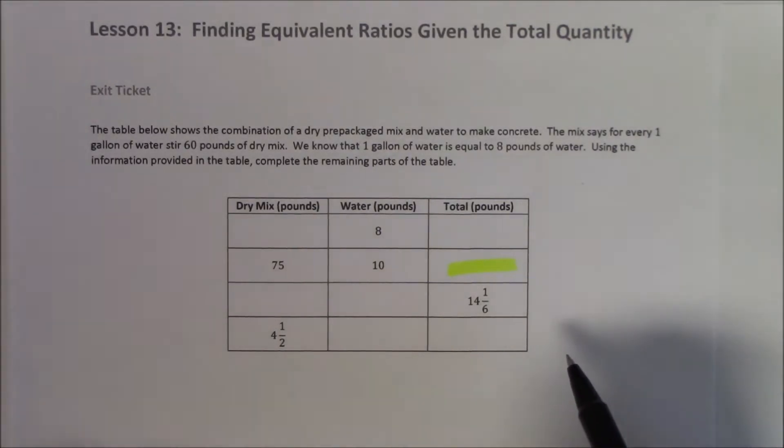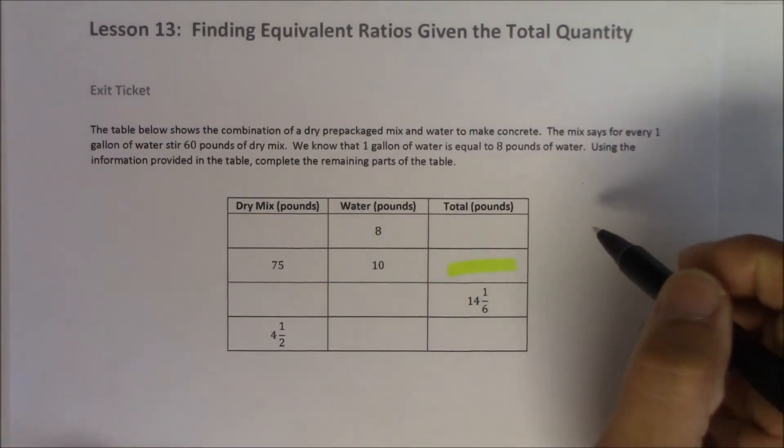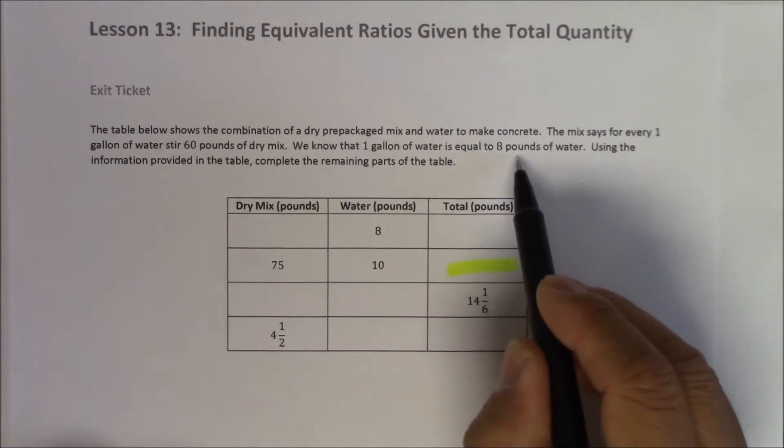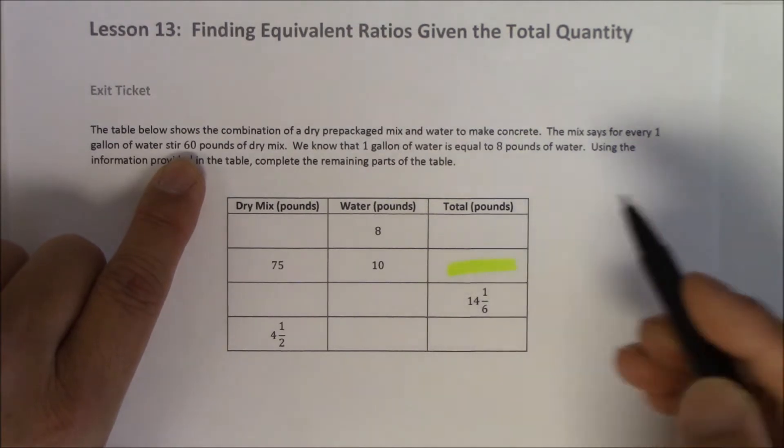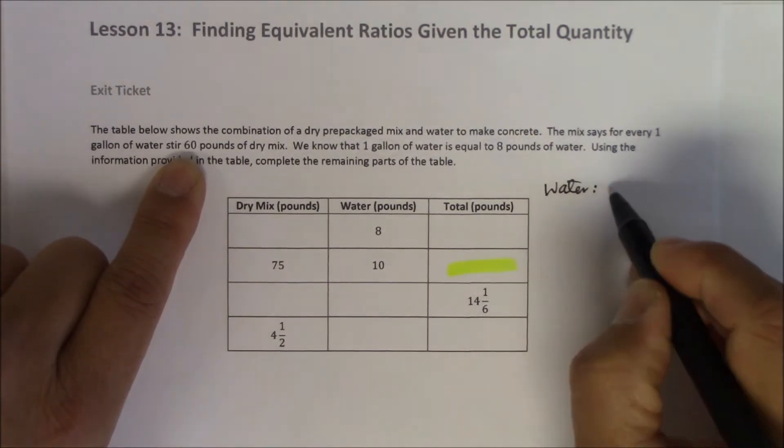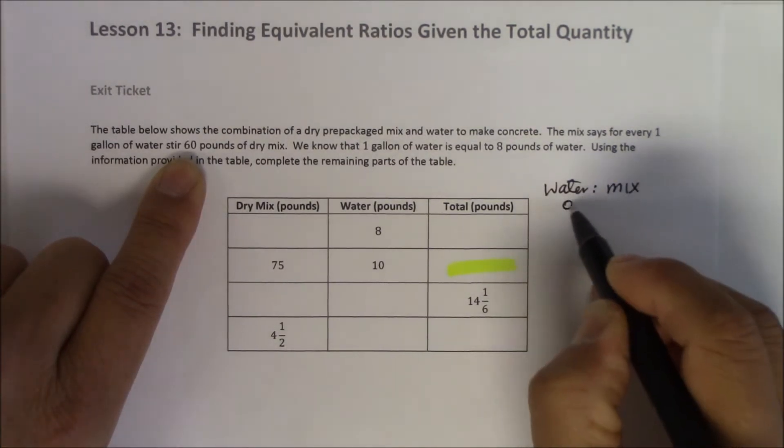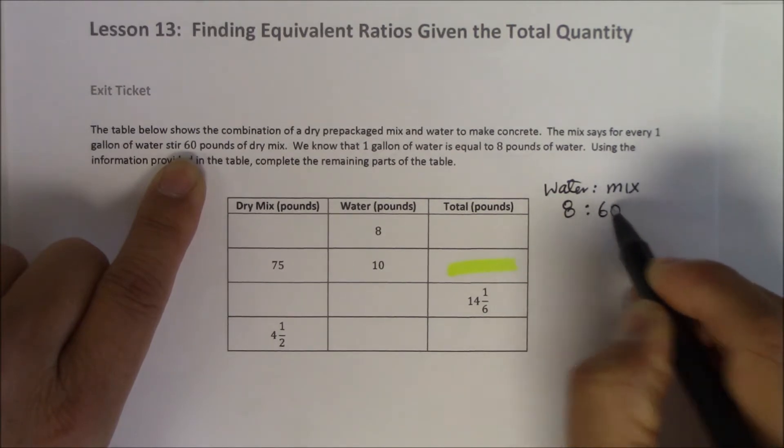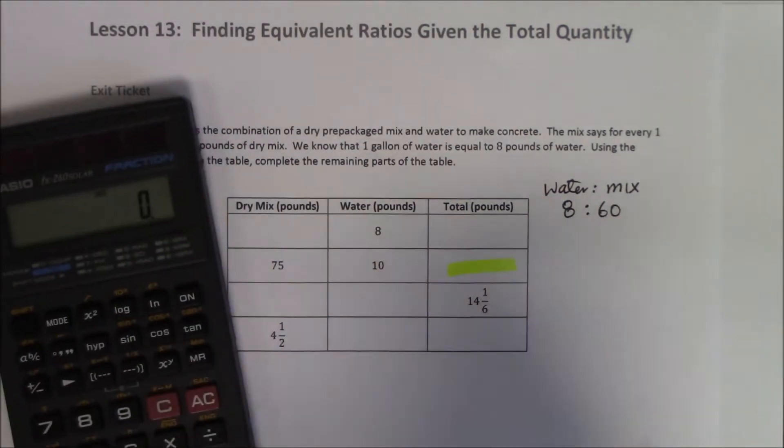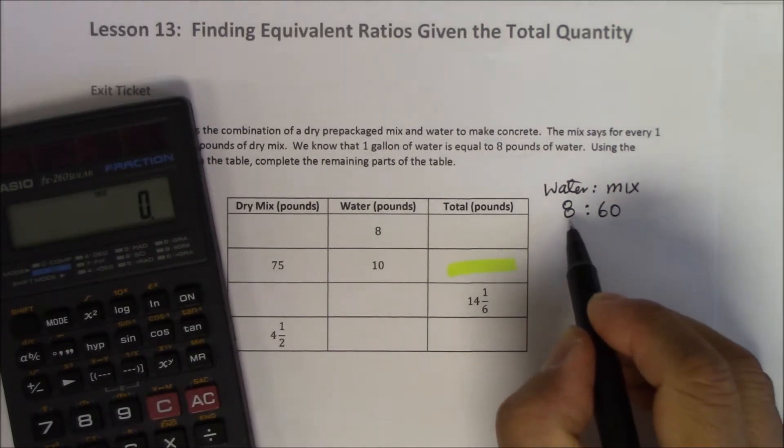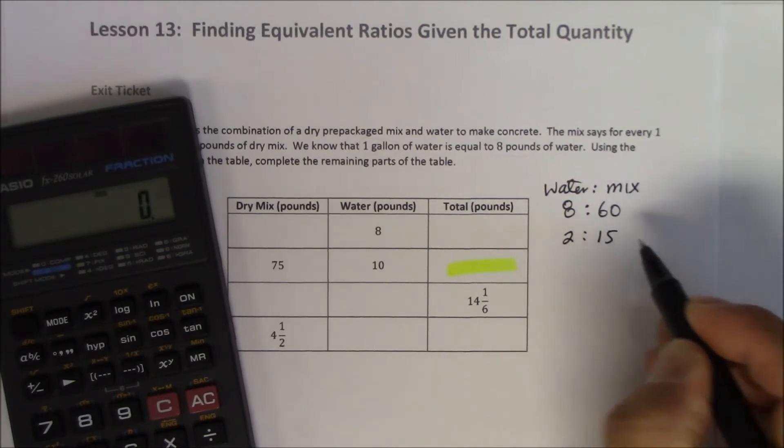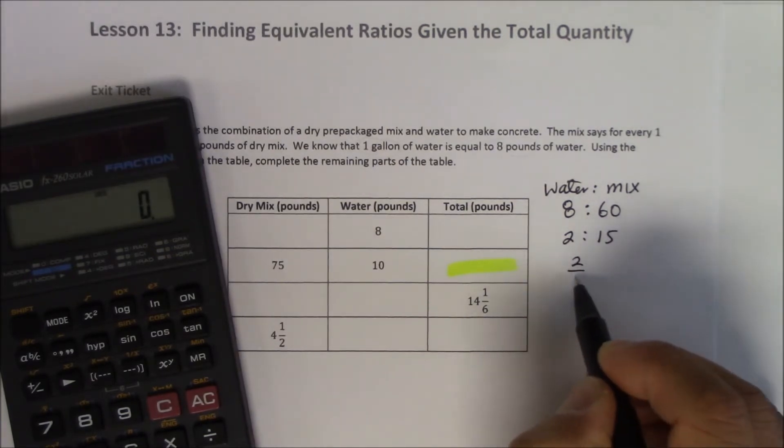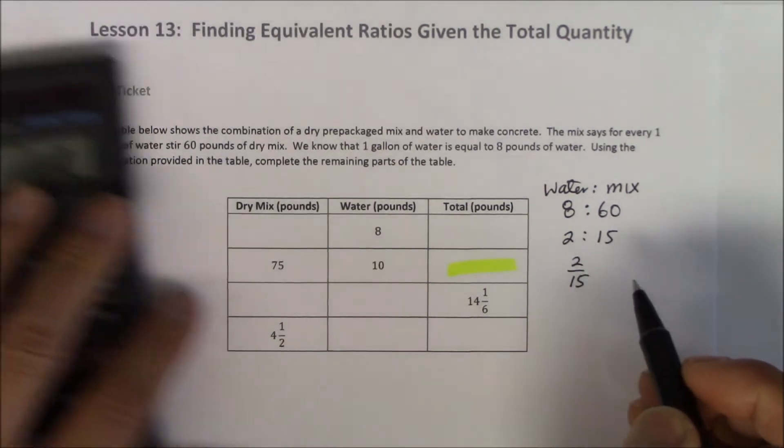We are using Eureka Math and we are given a table where we're told that for every 8 pounds of water you're going to add 60 pounds of dry mix. So the ratio from water to mix is 8 to 60. Now we could simplify this. Common factor between 8 and 60, 4 goes into 8 two times and 4 goes into 60 fifteen times. So it's going to be 2 to 15.